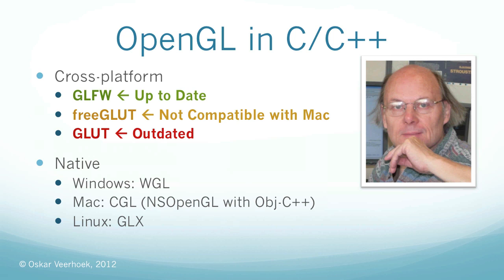For the native choices, on Windows you can choose WGL. On Mac you can choose CGL or Core OpenGL — it's a pretty misleading name; it doesn't actually refer to the core specification of OpenGL but it's just a library created by Apple. And you can also use NSOpenGL if you decide to use Objective-C++. On Linux you can choose GLX.